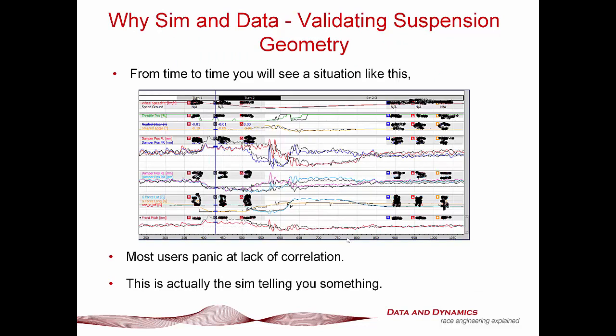Why sim and data? Validating suspension geometry. From time to time you're going to get a situation that looks like this. What we've got here is actual versus simulated data — speed, throttle, front dampers, rear dampers, lateral/longitudinal G, and front pitch. The rears aren't too bad. We look at the fronts. Most people, when they look at that, throw their hands in the air and say this is all crap — data acquisition doesn't work, simulation doesn't work. But what they're missing is that the simulator is trying to tell you something.